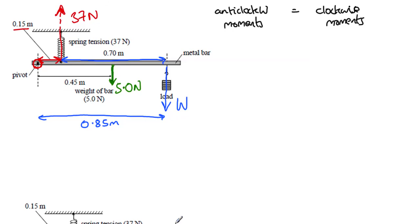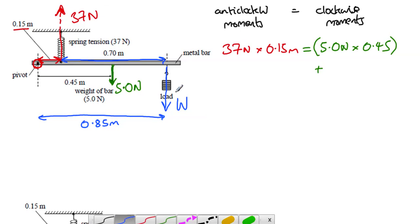Anticlockwise moments must equal clockwise moments. So, let's start off. The spring is acting anticlockwise. So, that means that 37 newtons multiplied by 0.15 metres is all we've got going on for anticlockwise moments when we're pivoting around here. And that's going to add up to, sorry, counteracting that, we've got the clockwise moment due to the weight, which is 5.0 newtons acting at a distance of 0.45. And put that in brackets. And then added to that is the mystery load, which is W, and that's at a distance of 0.85 metres.